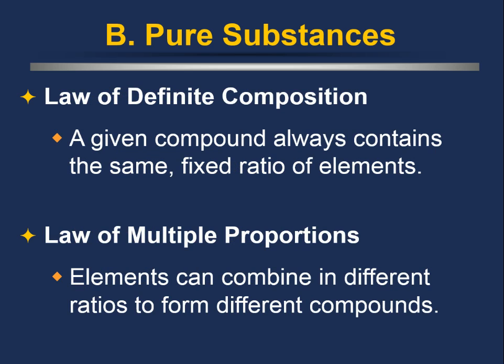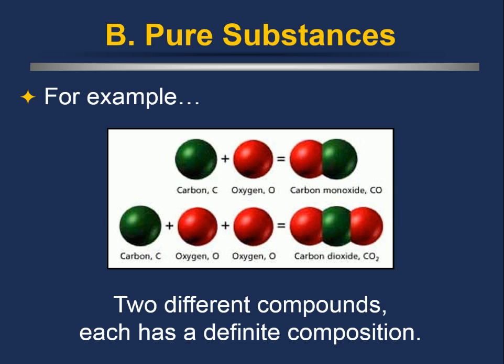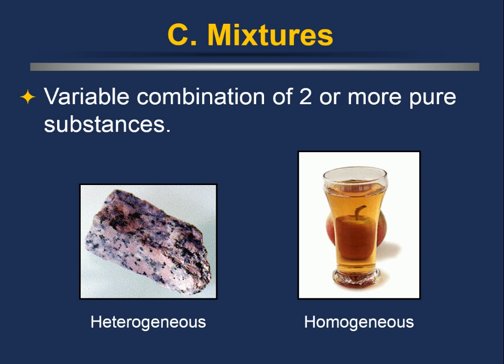The law of definite composition states that a given compound always contains the same fixed ratio of elements — if it's a different ratio, it's a different compound. The law of multiple proportions, which came a bit later, states that elements can combine in different ratios to form different compounds. For example, carbon monoxide and carbon dioxide are both made of carbon and oxygen — the difference is the ratio: one-to-one in CO versus one-to-two in CO₂. Different ratios mean two different compounds with two different compositions.